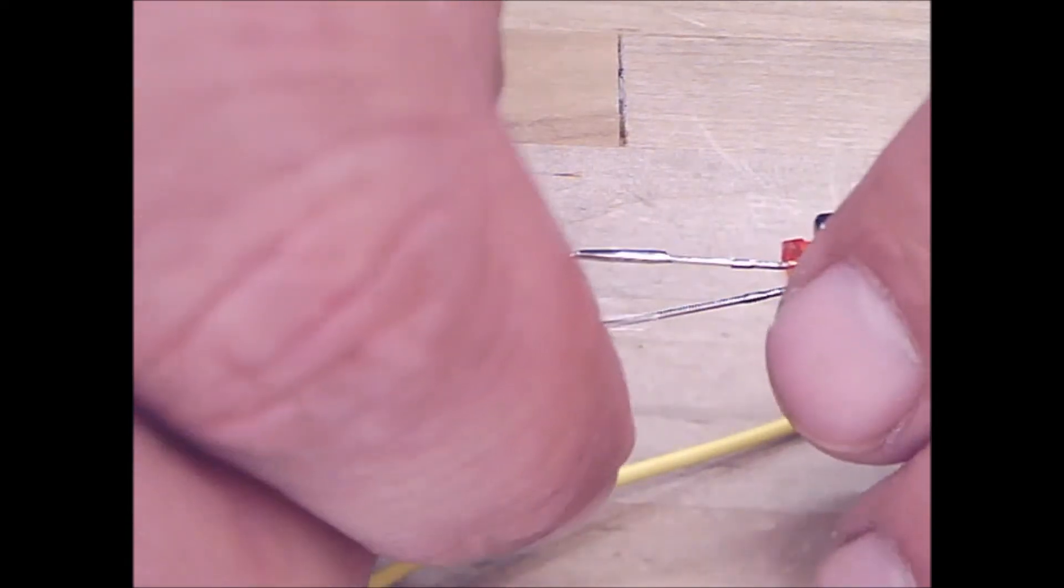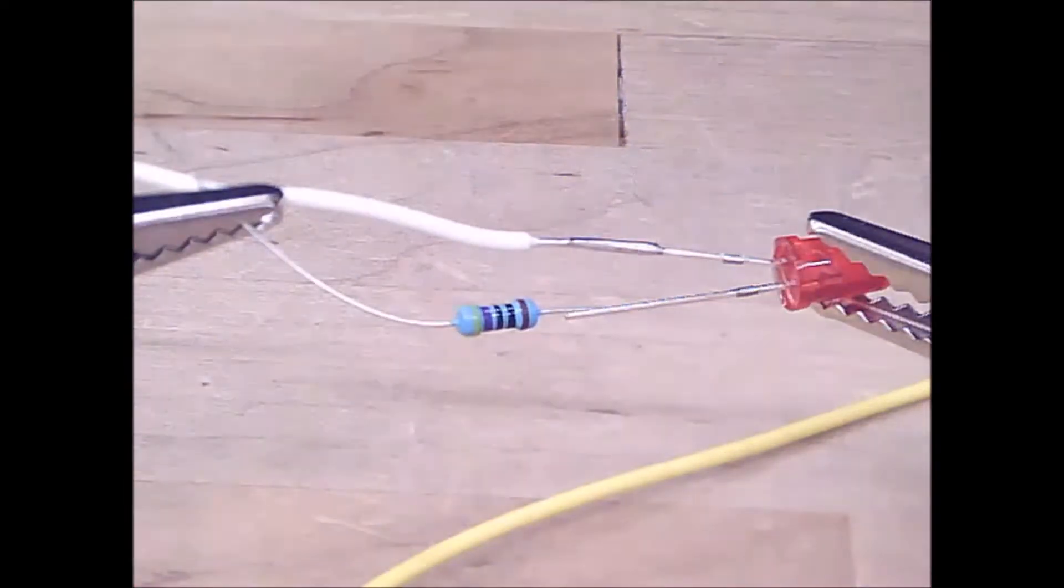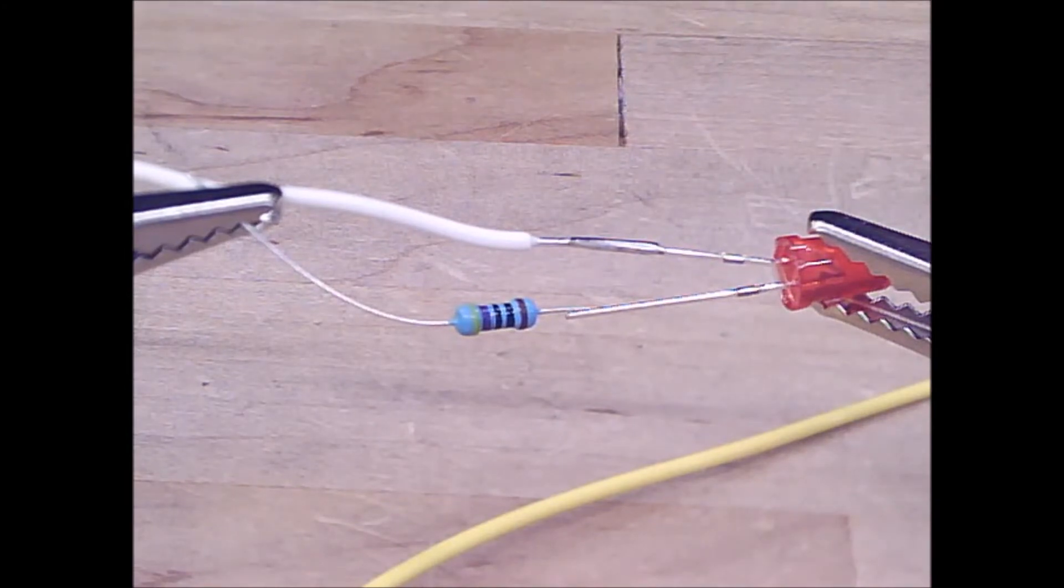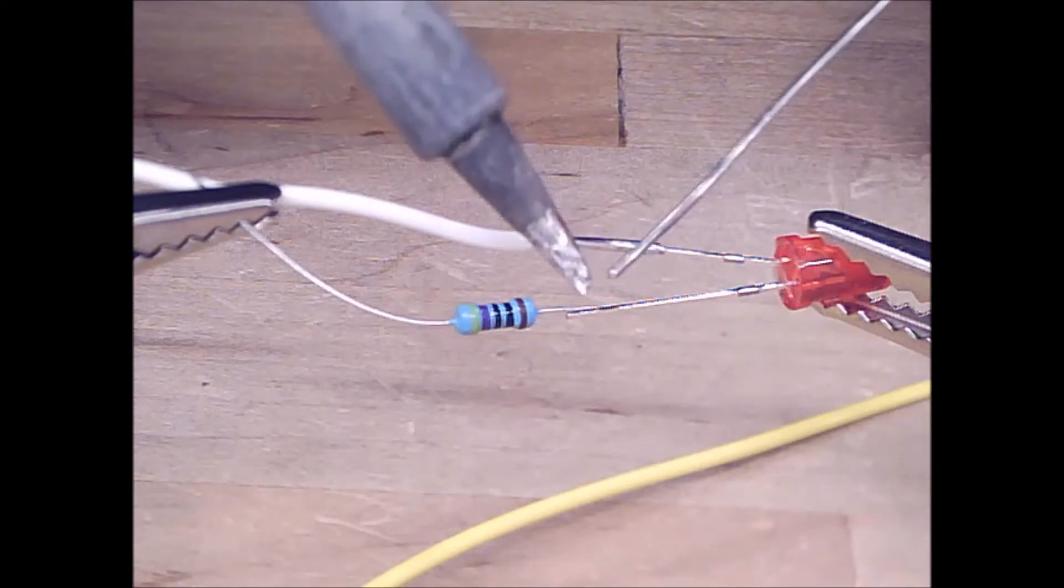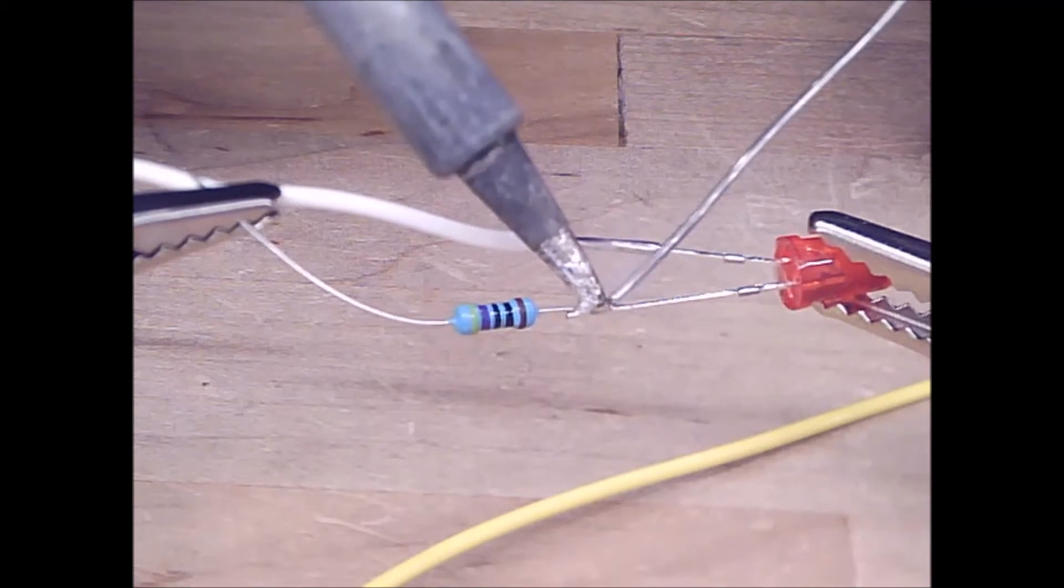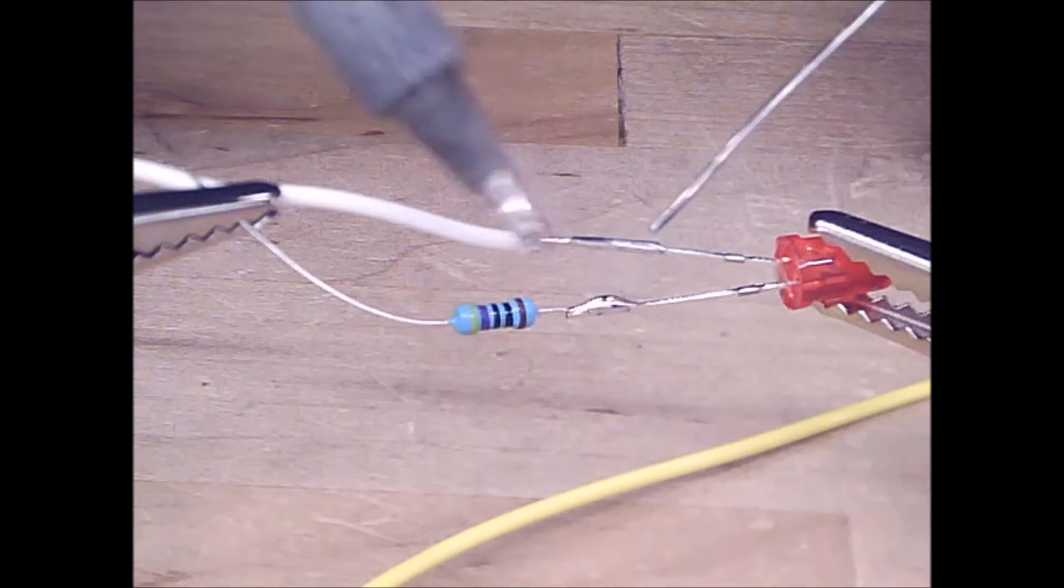That looks good. All right, so I'm going to grab my soldering iron, grab some solder, and very gently heat up both of these leads. Melt a bead of solder right between both of them. Excellent.